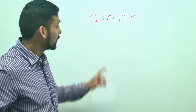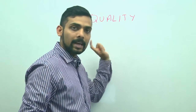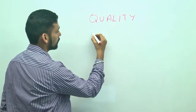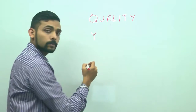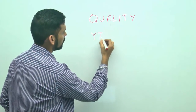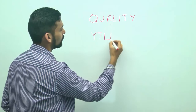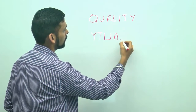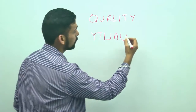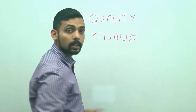It has to be upright, opposite direction, and inverted. So in the opposite direction, first will be Y, then T inverted, then I inverted, L inverted, A inverted, U inverted, and Q inverted.